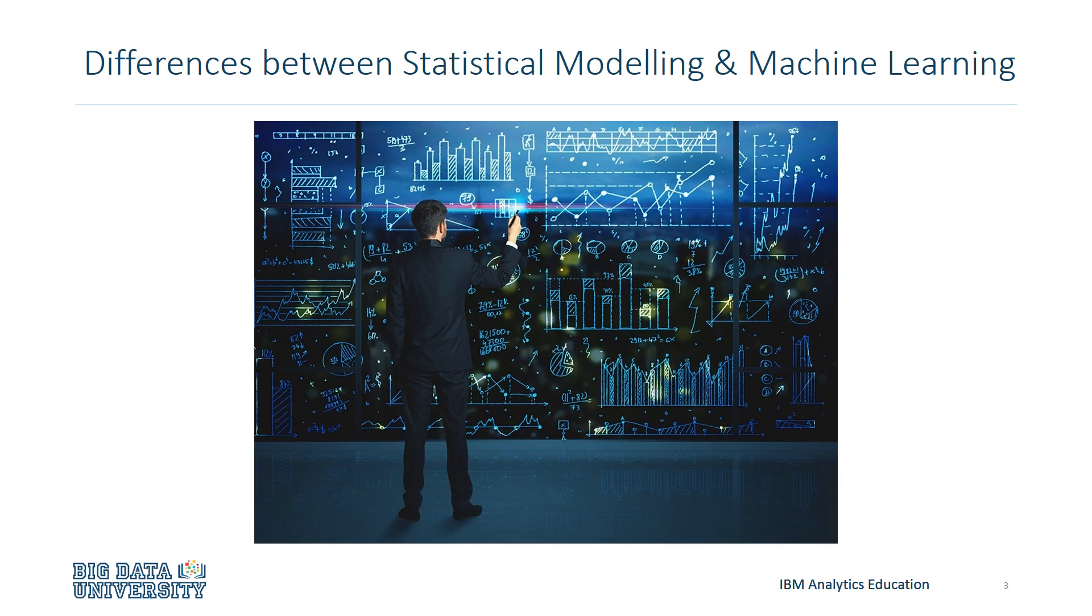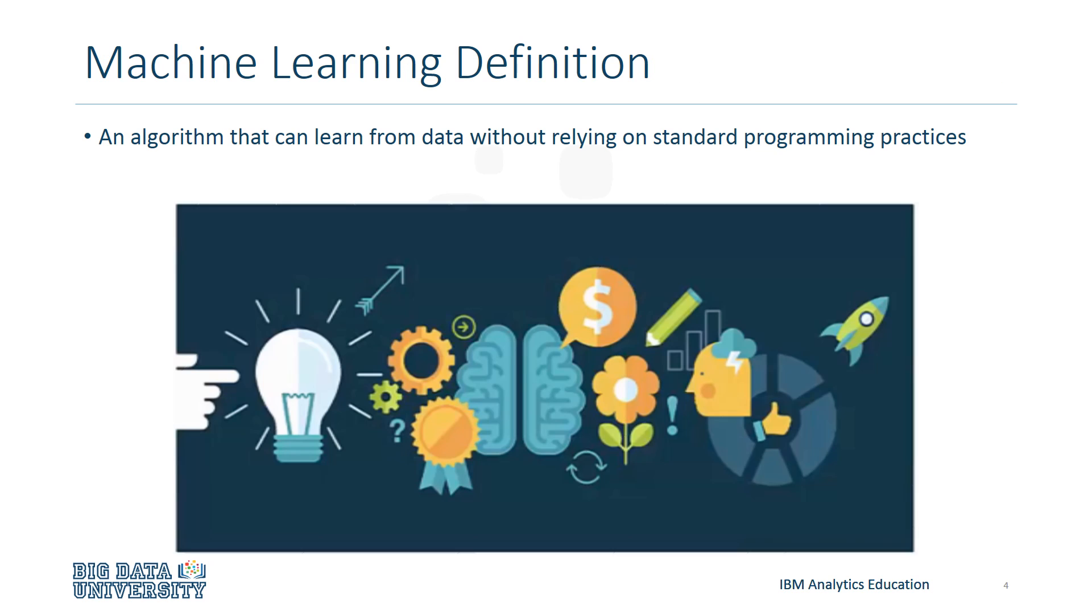Statistical modeling and machine learning can be mixed up sometimes. So, to clarify, machine learning is an algorithm that can learn from data without being reliant on standard programming practices, like object-oriented design.